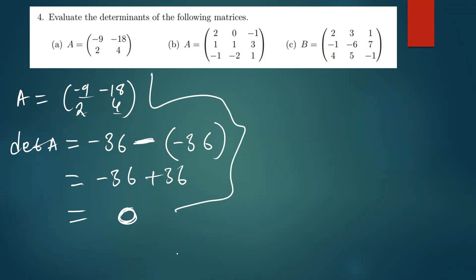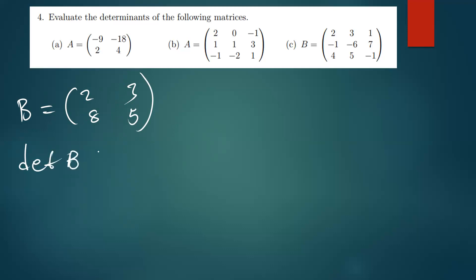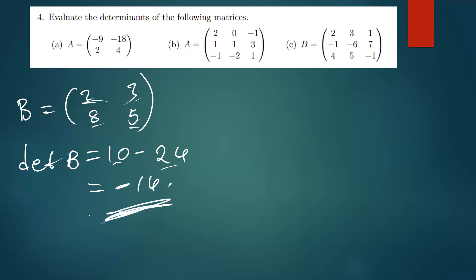Let me give you another example of a two by two matrix. We have matrix B equal to [[2, 3], [8, 5]]. The determinant of B is therefore 5 times 2, which gives us 10, minus 8 times 3, which is 24. So when you subtract, you get negative 14 as the answer. That is the determinant of this matrix.